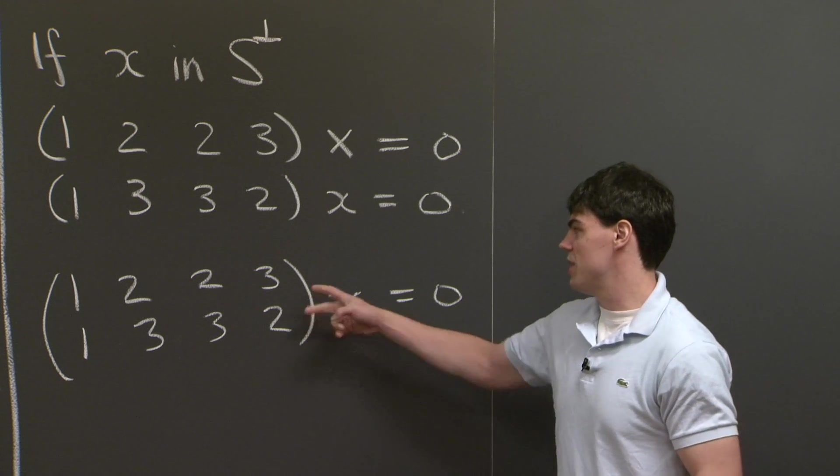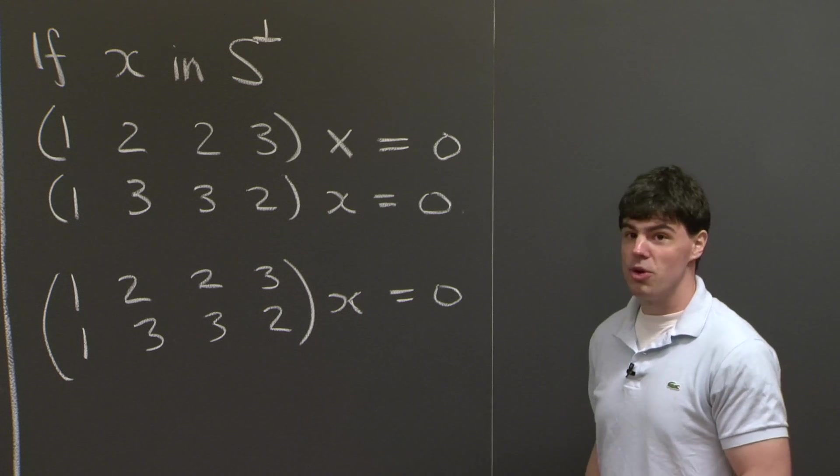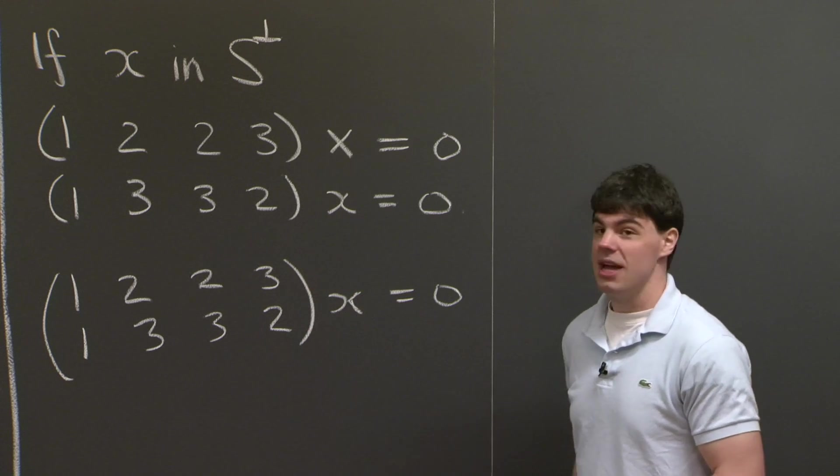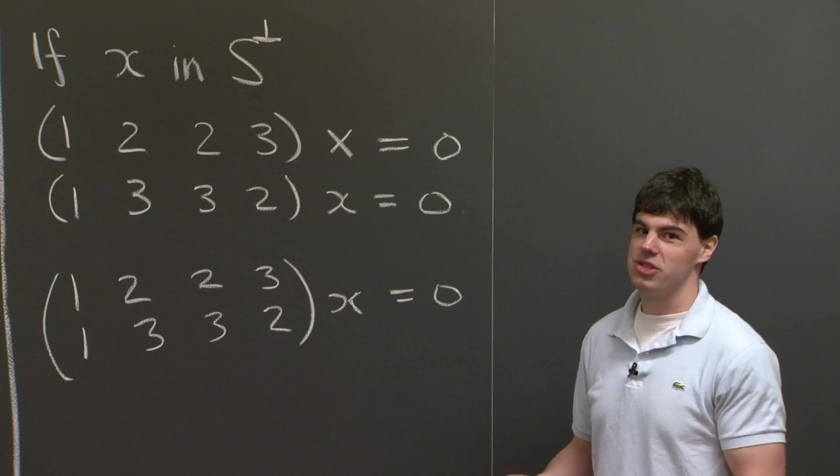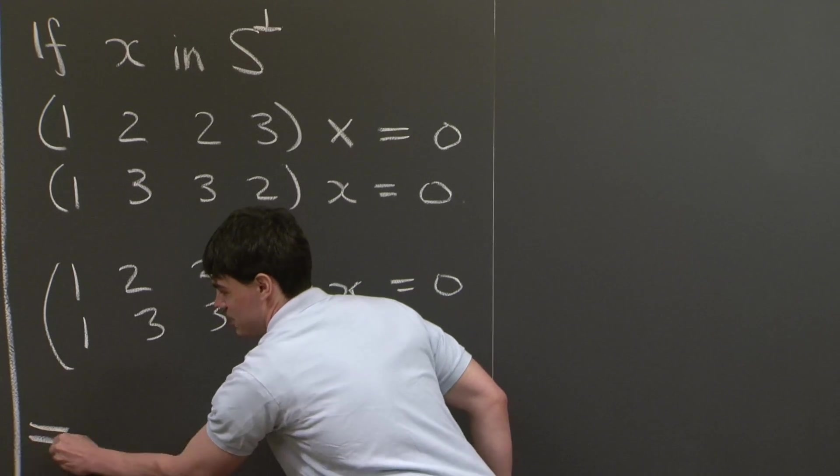So if we step back and take a look at this equation, we see that what we're really asking is to find all x that are in the null space of this matrix. So how do we find x in the null space of a matrix? Well, what we can do is we can row reduce this matrix and try and find a basis for the null space.